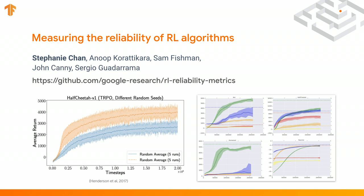Some algorithms will have broader bands in their performance curves — meaning they're less reliable, because every time you train you get a very different answer. Algorithms with narrow bands are more reliable. We provide different metrics so you can measure all those things. The final score is not the only thing you care about — if you need to run a hundred times every time you change the task, it's not a very reliable algorithm. But if you just want to solve one problem, the final score is what you care about.